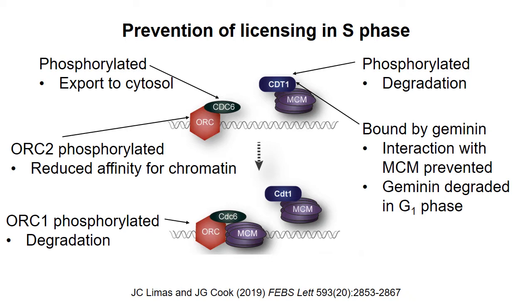Several mechanisms contribute to preventing licensing during S phase, resulting from activation of certain cyclin-dependent kinases. Focusing on mechanisms found in metazoans such as humans: first, CDC6 is phosphorylated and exported from the nucleus to the cytosol, so it is not present in the nucleus to bind to the origin recognition complex. ORC2, one of the subunits of the origin recognition complex, is phosphorylated, which reduces its affinity for chromatin. And ORC1, the largest ORC subunit, is phosphorylated, which results in its degradation. Without these two subunits, the origin recognition complex is unable to form at replication origins.